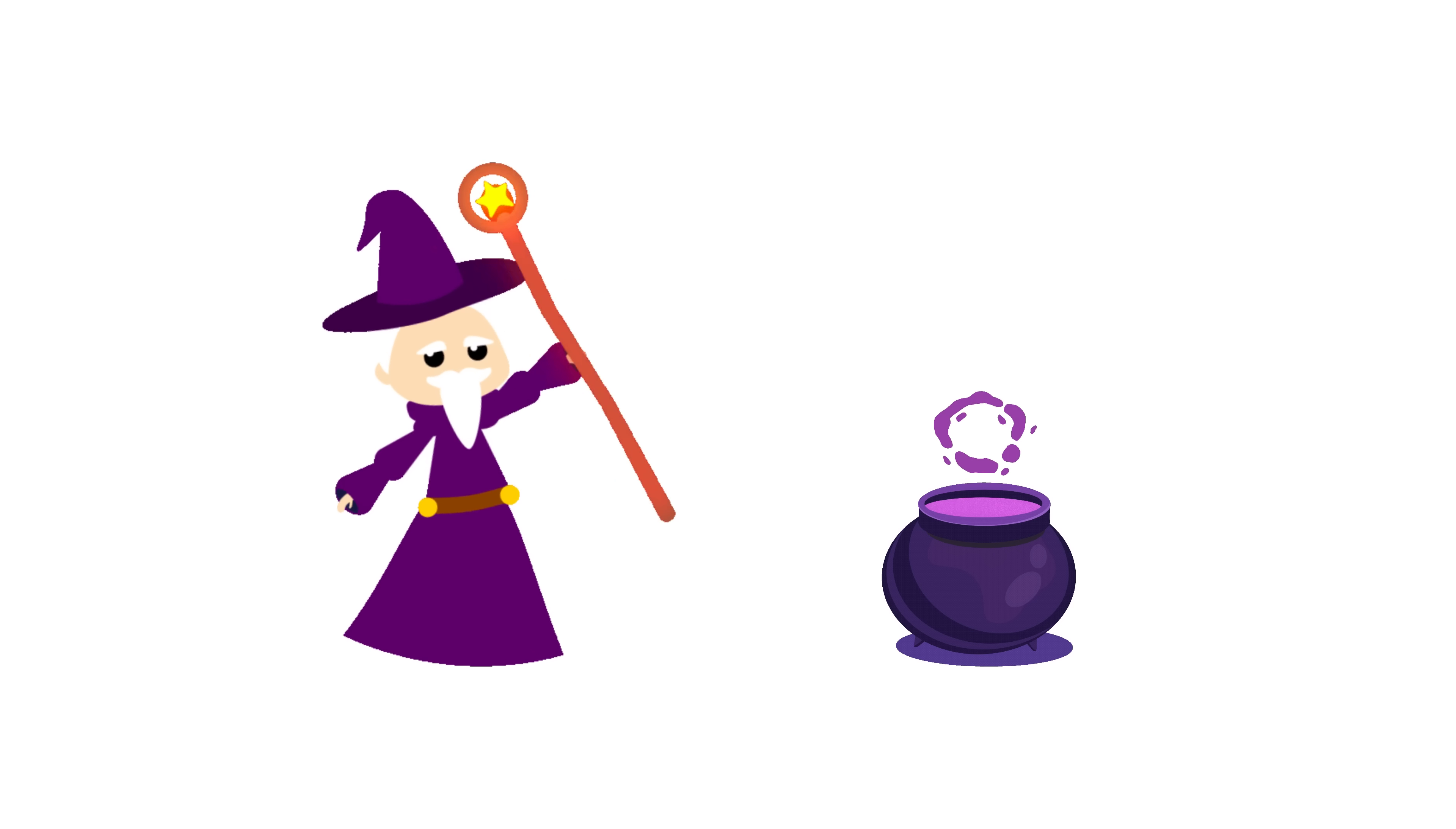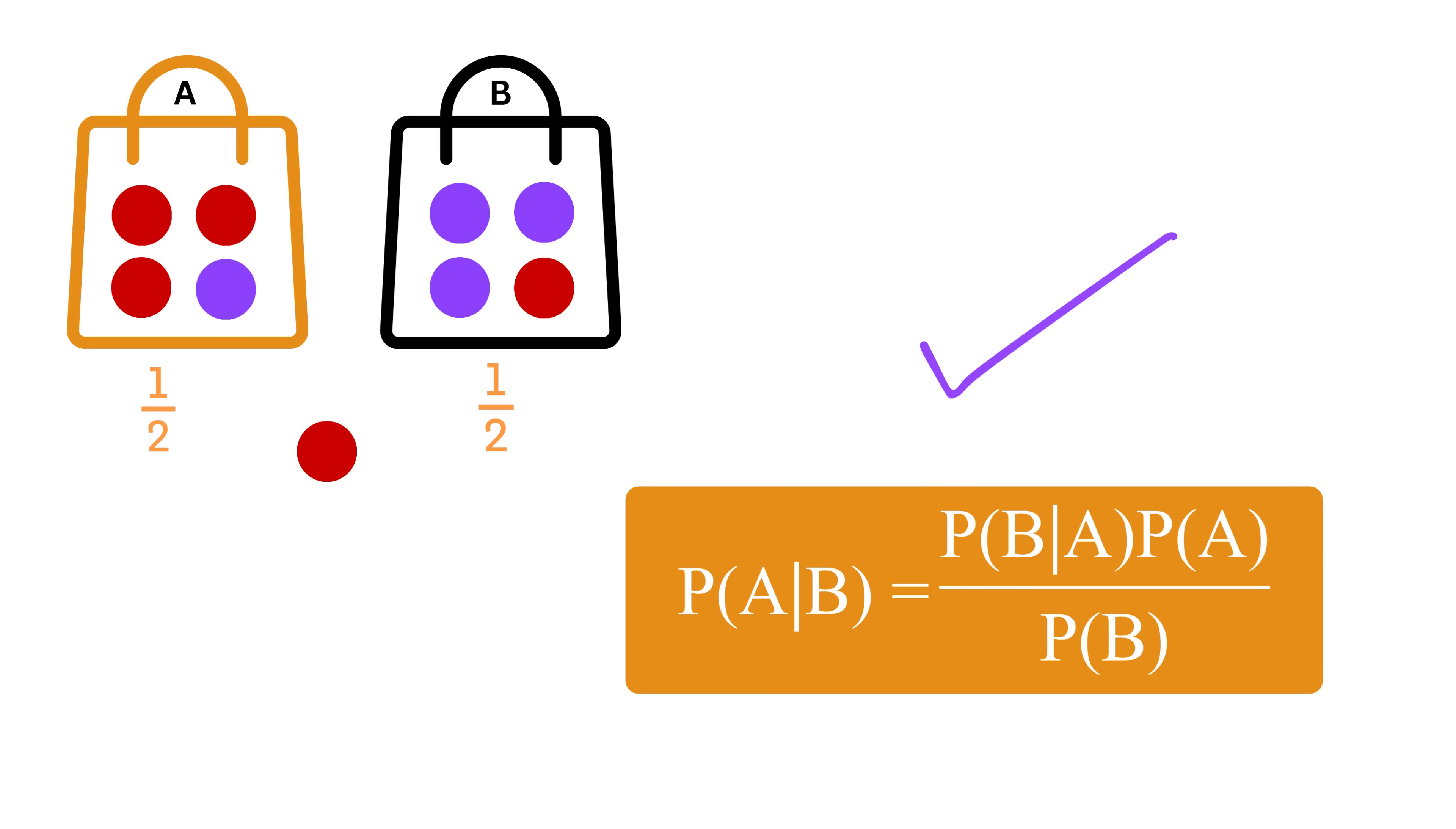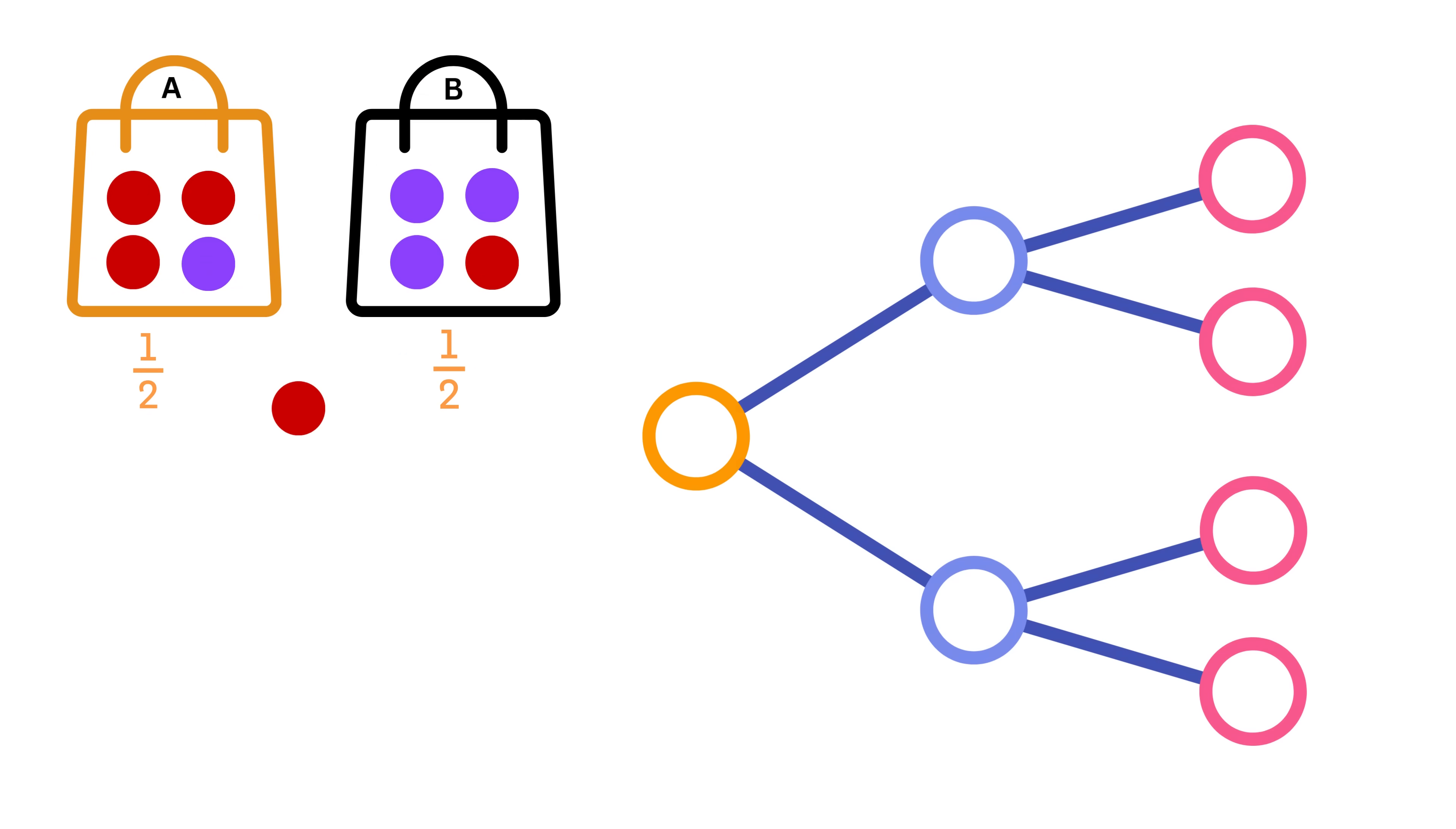Now, I will show you one more magic. Coming back to our original problem of finding the probability of choosing bag A given the outcome was a red ball, we can use this formula to find the values. But I will show you a nice tree diagram method, which is mostly used when dealing with problems related to Bayes' theorem.